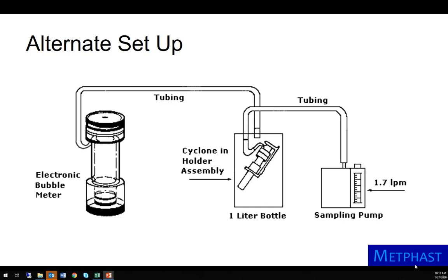Sometimes it's difficult to connect the meter to the inlet of the sampling train. For example, here is a respirable cyclone and a filter cassette assembly. Given difficulties in attaching tubing to the inlet of the cyclone, the entire sampling assembly is placed within a bottle. In this way, the bubble meter can be connected to the bottle rather than the cyclone. The same procedures mentioned for the soap bubble meter are used to determine the air flow.